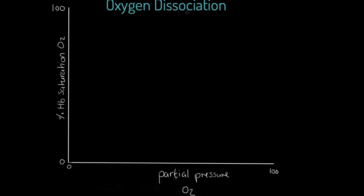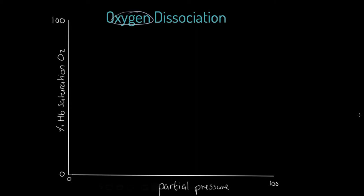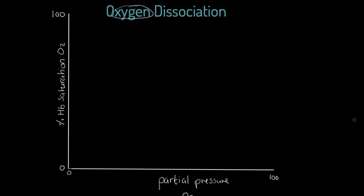Oxygen dissociation is the tendency of oxygen to leave behind hemoglobin. That's what it means - how likely is that to happen? What I want to do here is just show you this graphically.